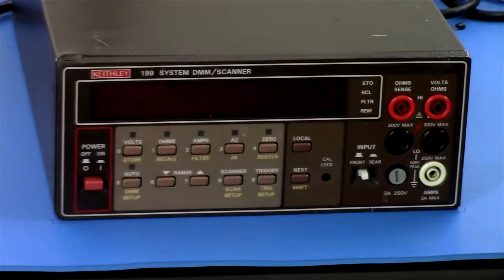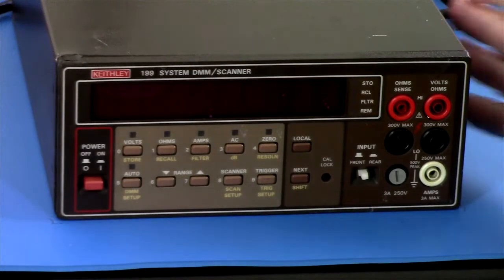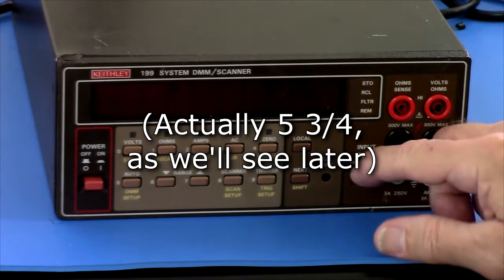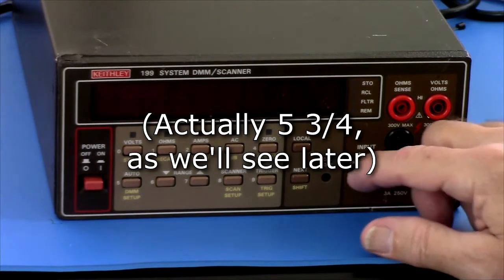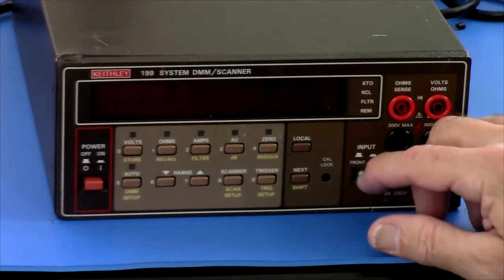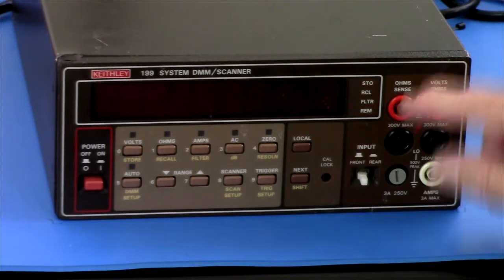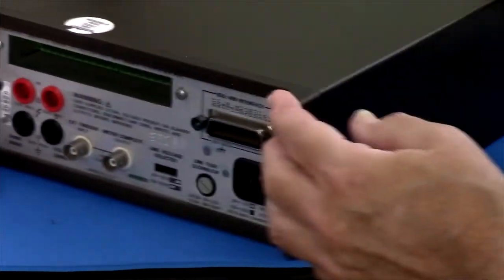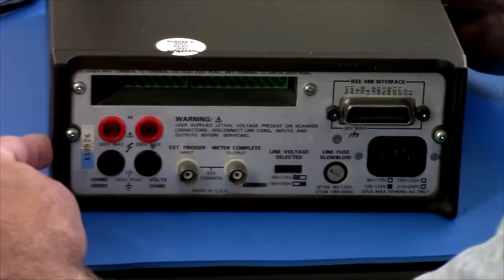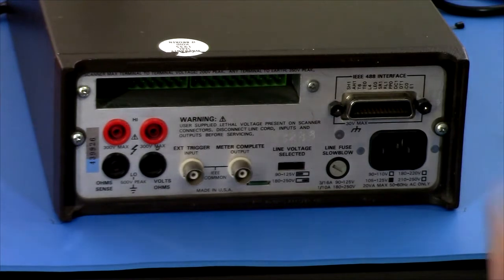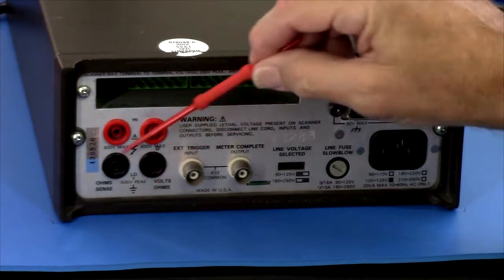This is a Keithley 199, a five and a half digit meter, and I got it because the switch here is broken, so you can only use either the front or the back. It has terminals on the front and on the back, you see. Rear terminals. Wait. There, rear terminals.